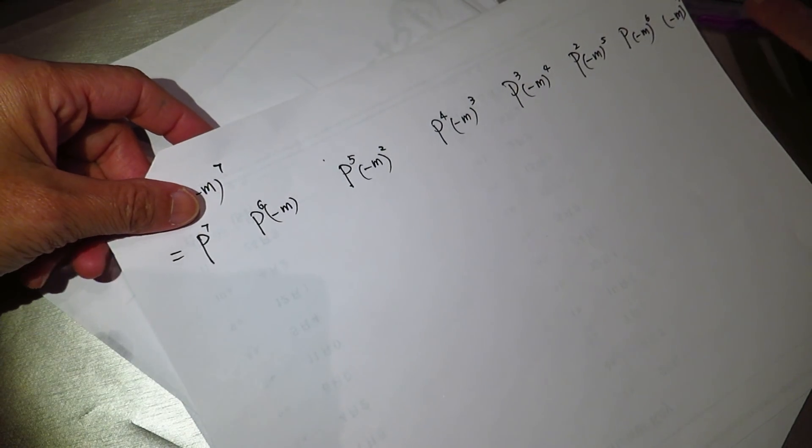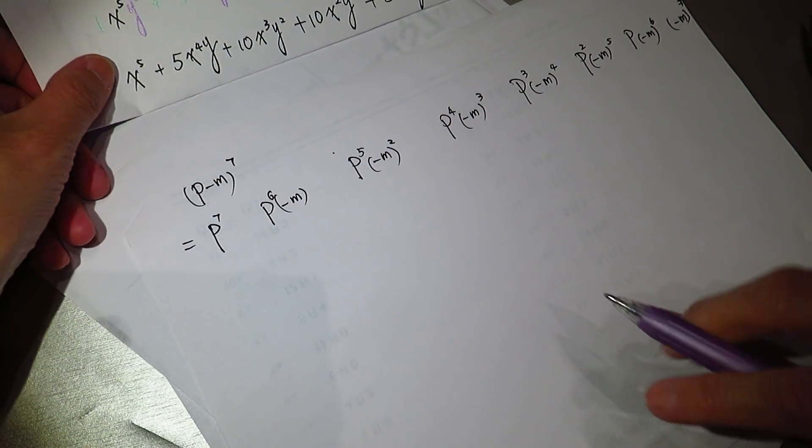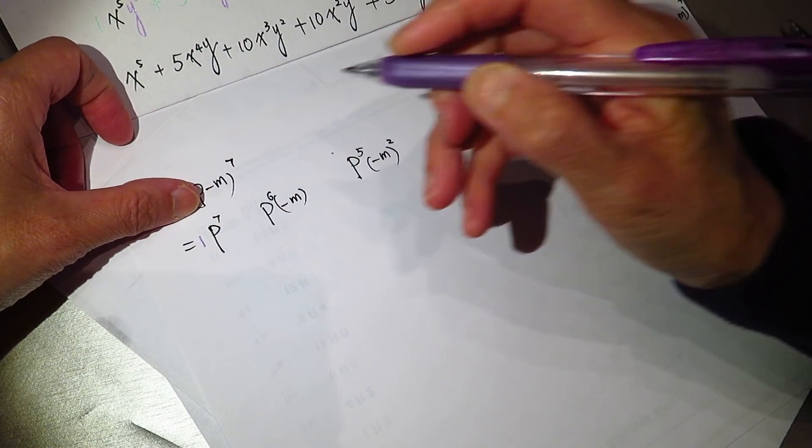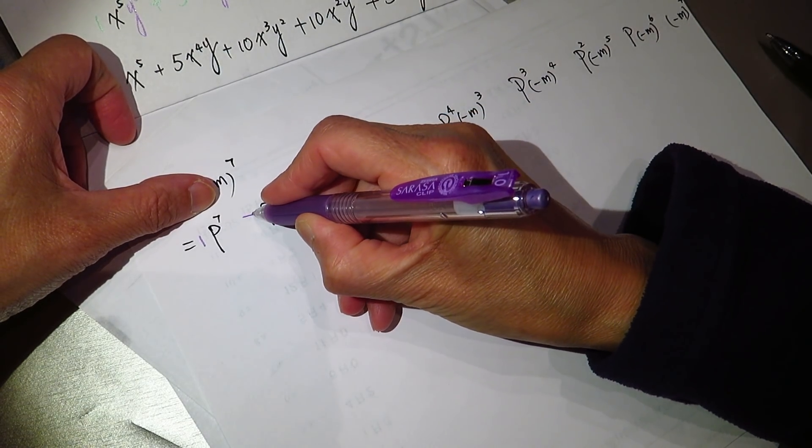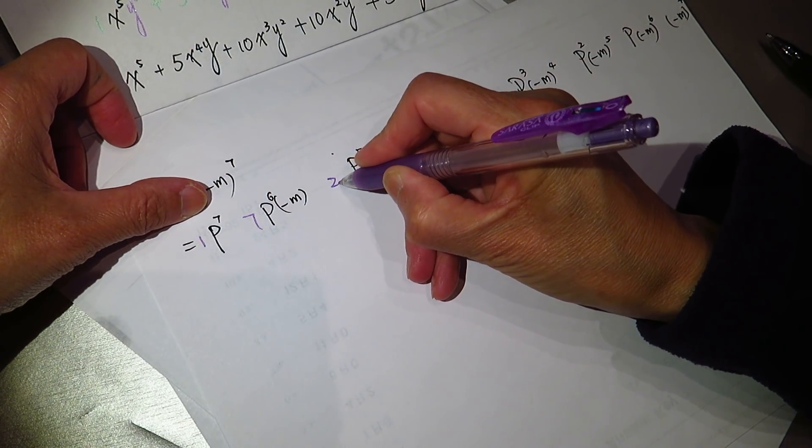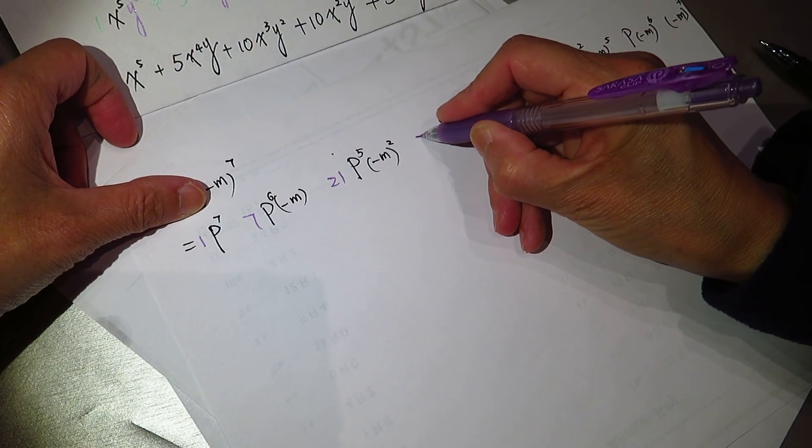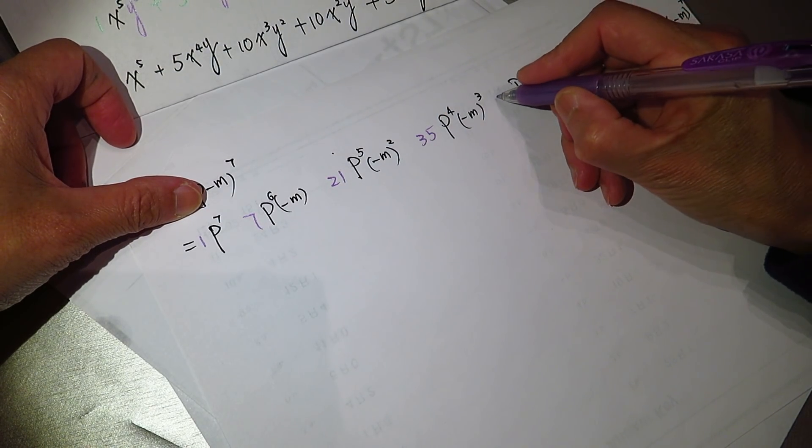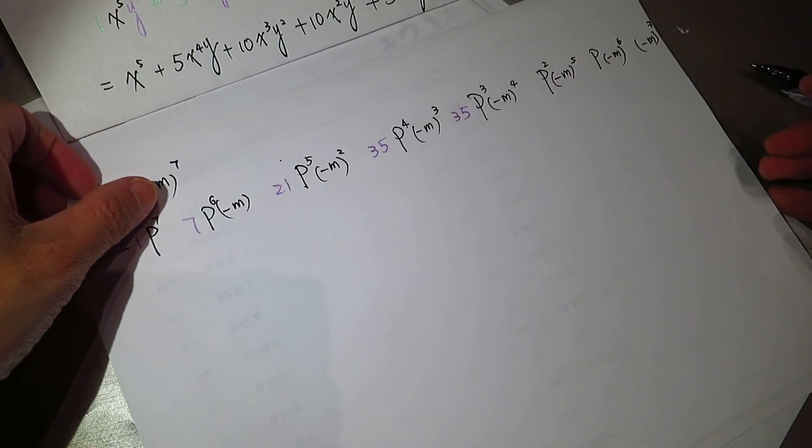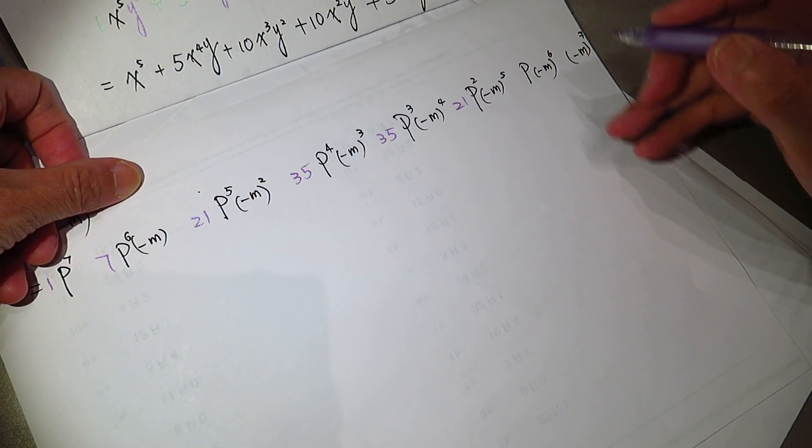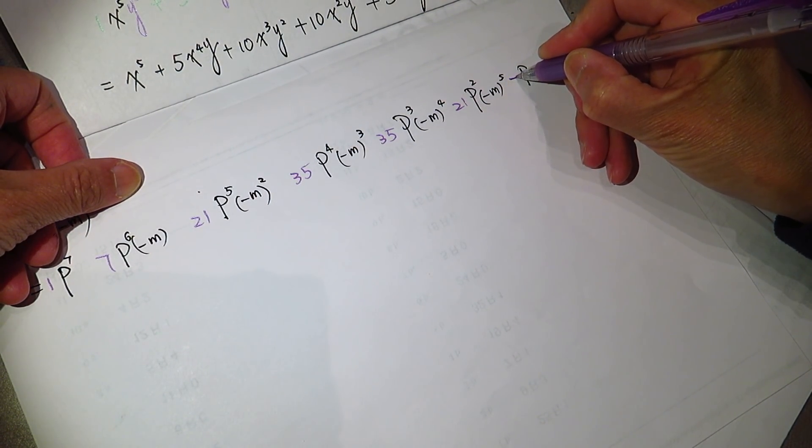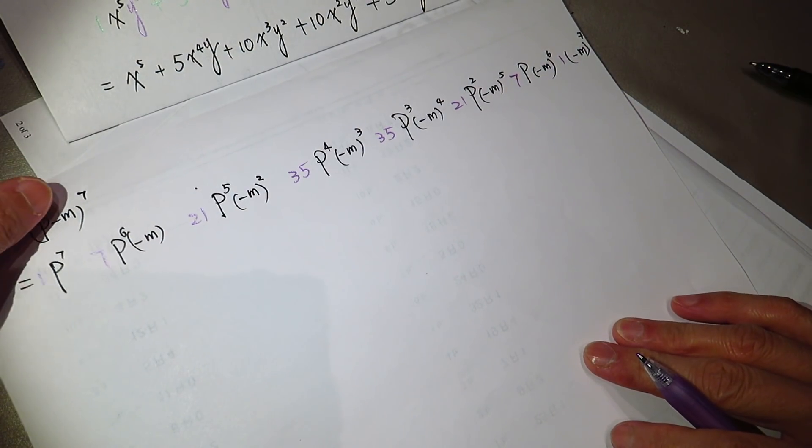Now we look for the coefficient. The coefficient is 1, 7, 21, 35, 35, 21, 7, 1. Okay.